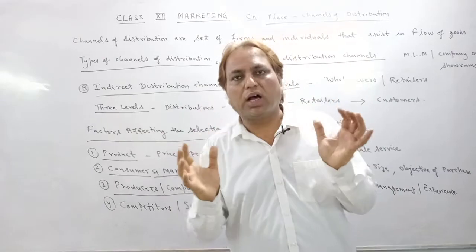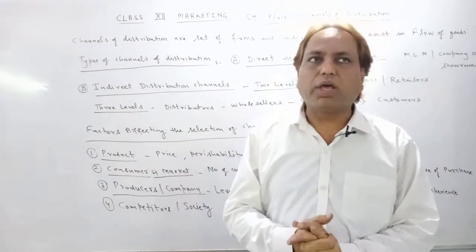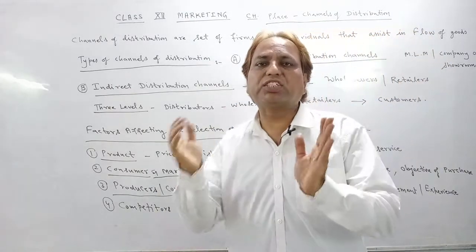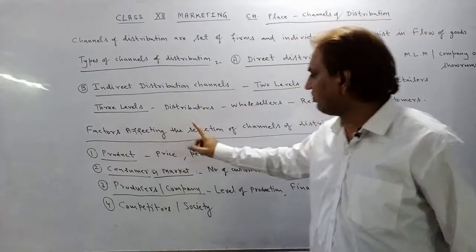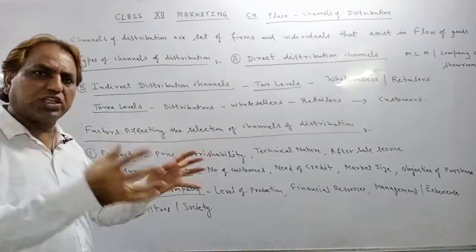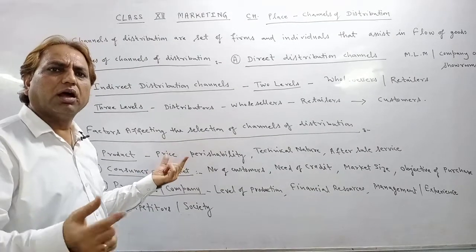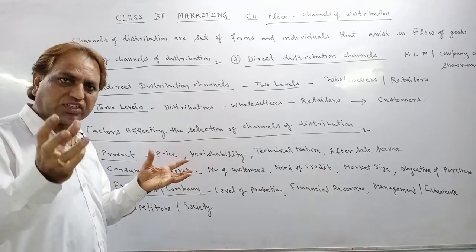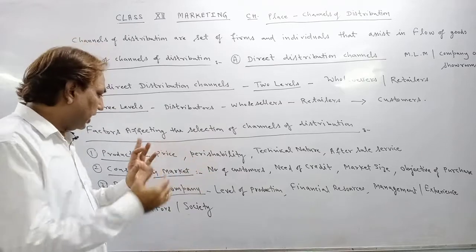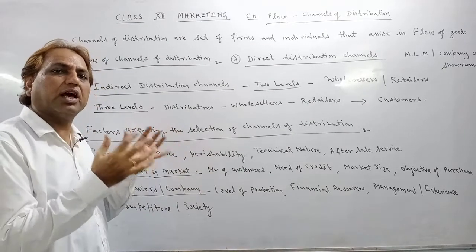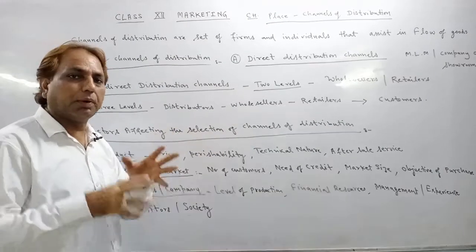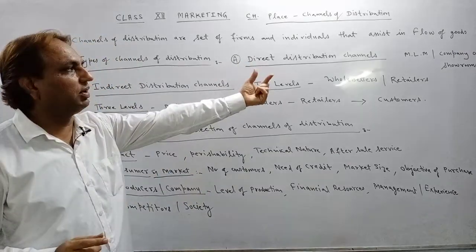Now let's move on to the factors that influence the selection of channels of distribution. First, we consider the product. If the price is very low, we can sell directly. We also consider perishability — if our product is not durable and perishes quickly, we should use shorter channels like single-level or two-level distribution.